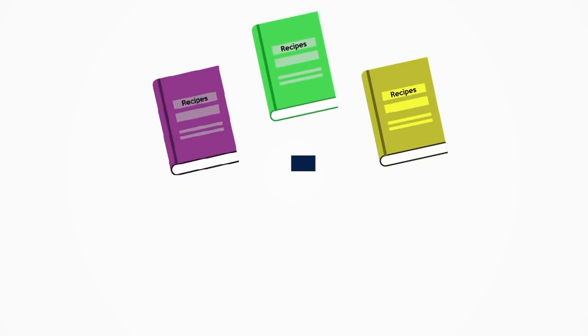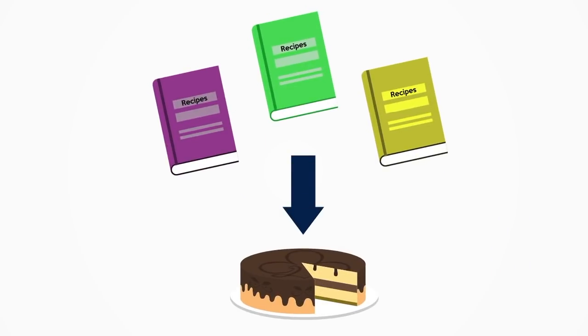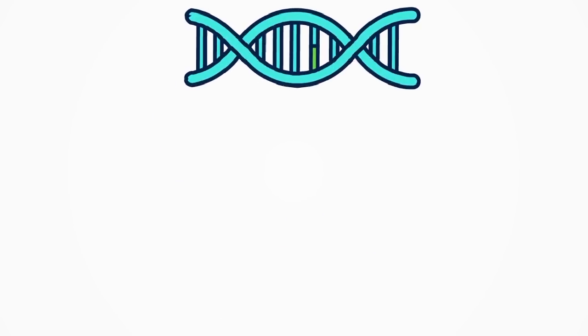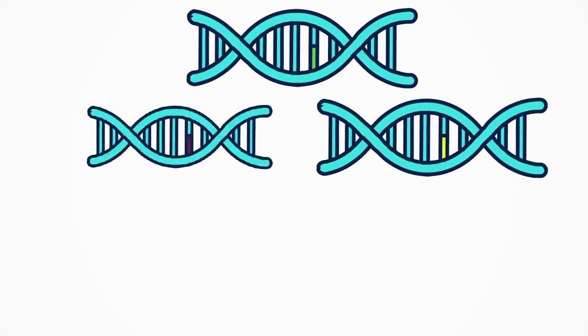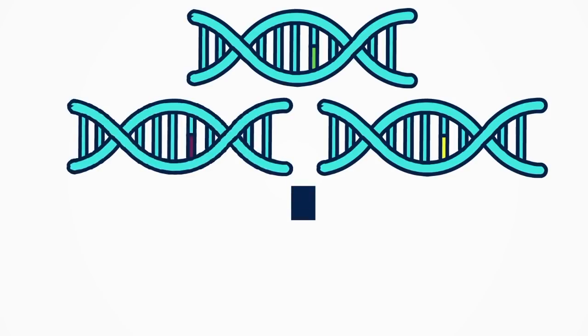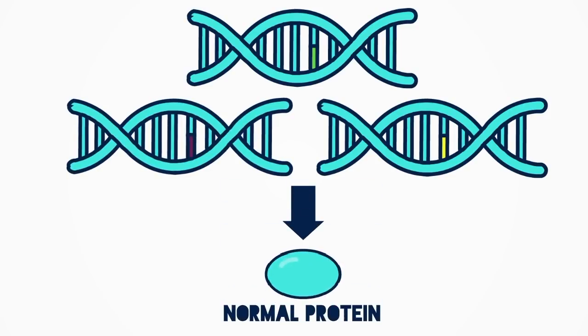If you were to ask several people to give you recipes for a cake, each one would be slightly different, but in the end all the recipes would still make a cake. It's the same thing with our genes — there's no perfect version of any gene. There are lots of different versions that end up making the normal protein as the end product.